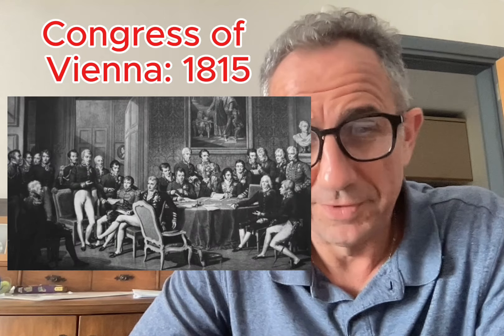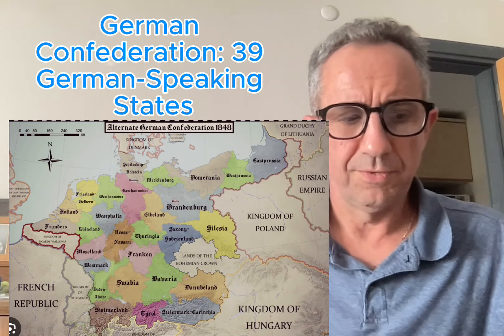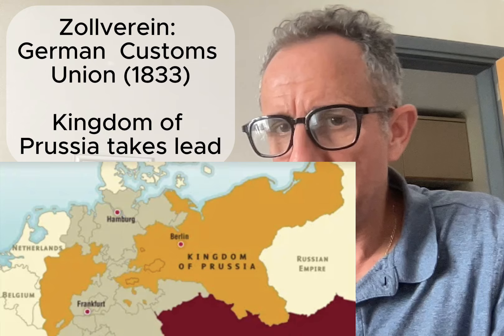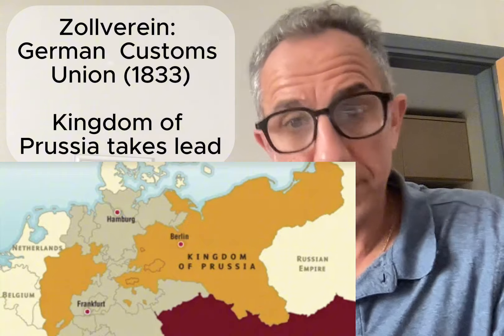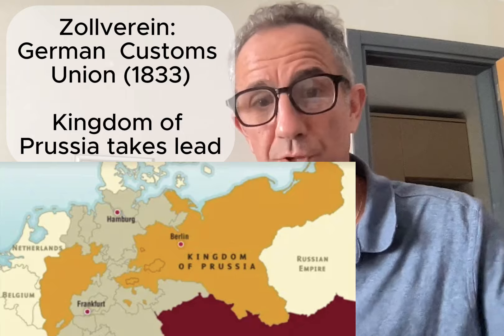The Congress of Vienna in 1815, when the powers of Europe came together to reestablish and restore order, a confederation called the German Confederation of 39 German-speaking states was established — another step on the way to eventual German unification. Interestingly, in economics, in 1833, the Zollverein, which was a German customs union, was established, and Prussia took the lead. Remember that name: Prussia. It's northeast in Germany, the capital is Berlin. This economic union is led by Prussia — sometimes we refer to Prussia as Russia with a P.